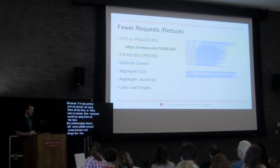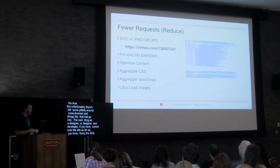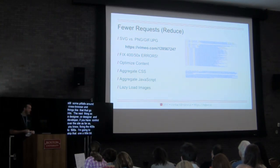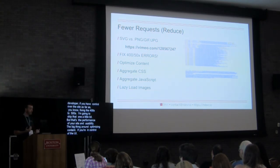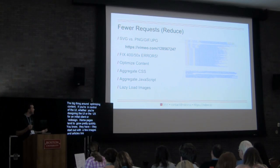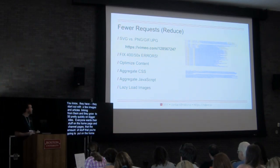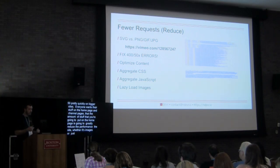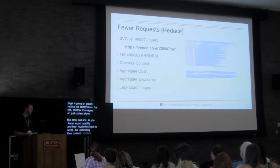As a designer or designer/developer, if you have control over the site, you can fix 400s and 500s — that's performance and usability. The big thing around optimizing content: if you're in control of the UI, whether designing for an initial client or a redesign, homepages tend to grow pretty quickly. They start with a few images and articles and then grow to 50 pretty quickly on bigger sites — everyone wants their stuff on the homepage or channel pages. The amount of stuff on the homepage is going to greatly reduce the performance, whether it's images or just content alone. Encouraging content optimization is pretty important for performance.